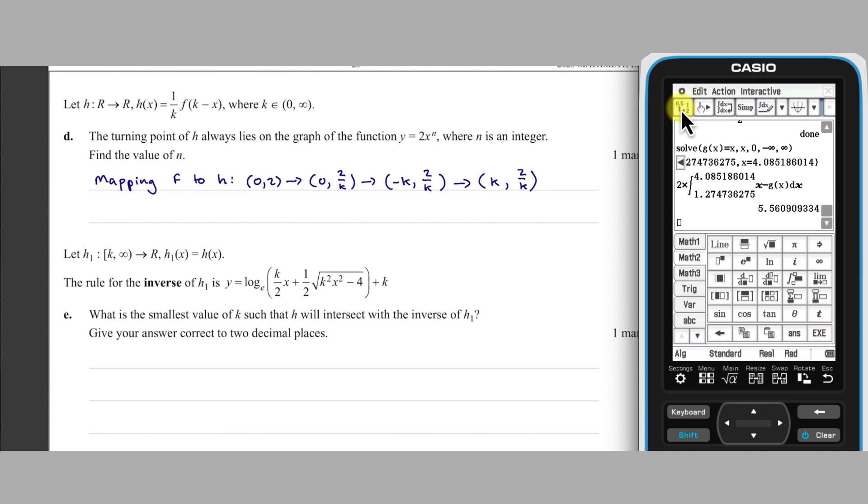From this, we can see that the turning point of H, K,2 times K to the minus 1, lies on the line Y equals 2 times X to the power of N, if N equals minus 1.